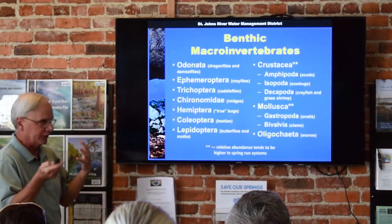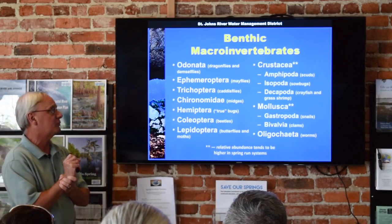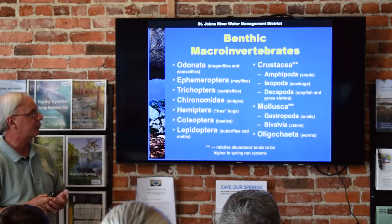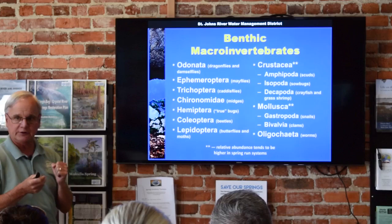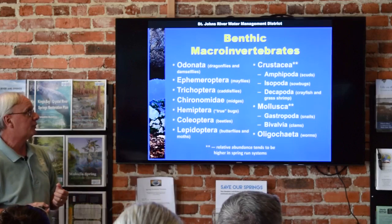Let's talk about benthic macroinvertebrates — near and dear to my heart. Benthic means associated with the bottom, living on or in the bottom habitat of aquatic ecosystems like rivers, lakes, or estuaries. Macro means big enough to see with the naked eye — you don't need a microscope. And an invertebrate is an animal without a backbone. In freshwater ecosystems, most of the benthic invertebrates you're going to see are some kind of aquatic insect.